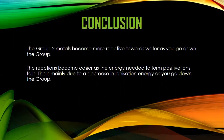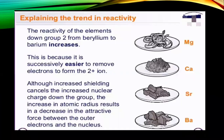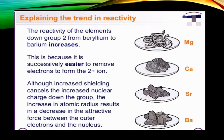Why? Because atom size is increasing and ionization energy is decreasing, so it is easier to lose electrons and form +2 positive ions. From beryllium to barium, reactivity increases because it is easier to remove electrons to form +2 ions. Although shielding effect also increases, overall, when atomic size increases, it becomes easier to remove electrons from the outermost shell — that is, ionization energy decreases, favoring the formation of +2 ions.